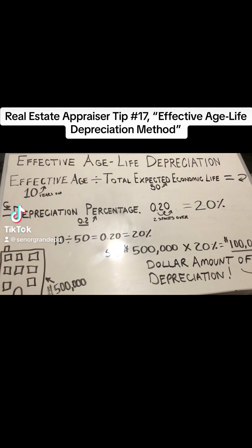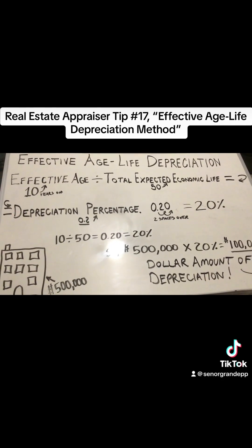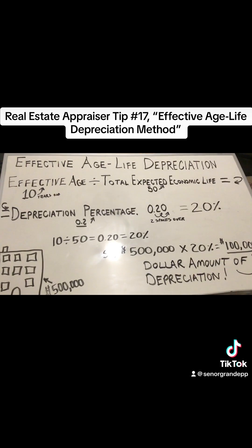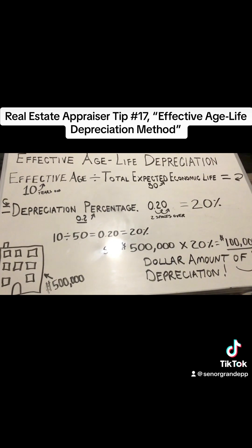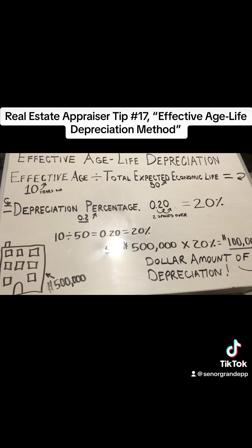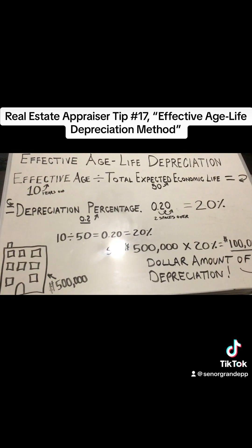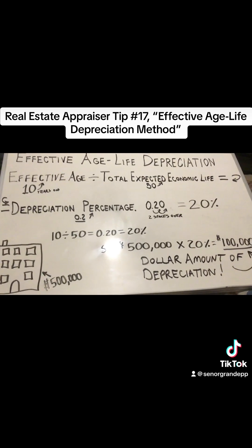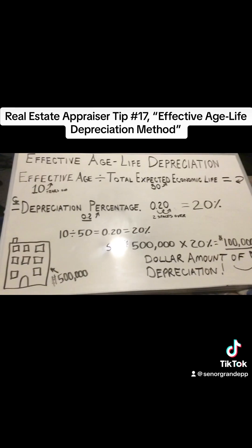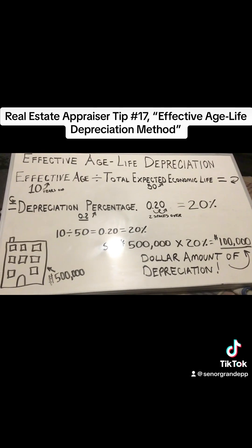Real Estate Appraiser Tip Number 17: the Effective Age Life Depreciation Method. I am going to teach you the Effective Age Life Depreciation Formula. This is real estate appraisal basics — one of the first formulas you're ever going to learn, and anyone can use this, especially people that are flipping homes.